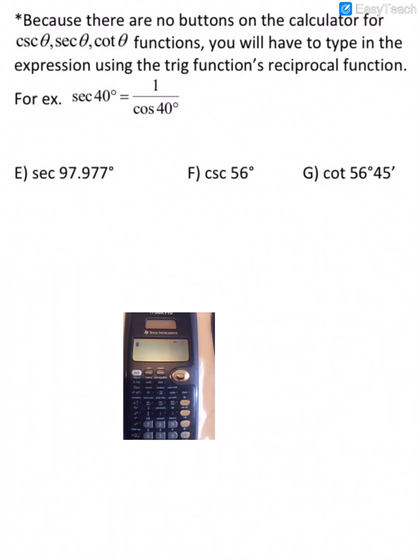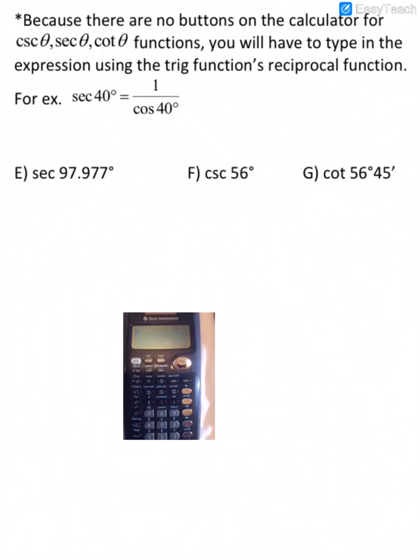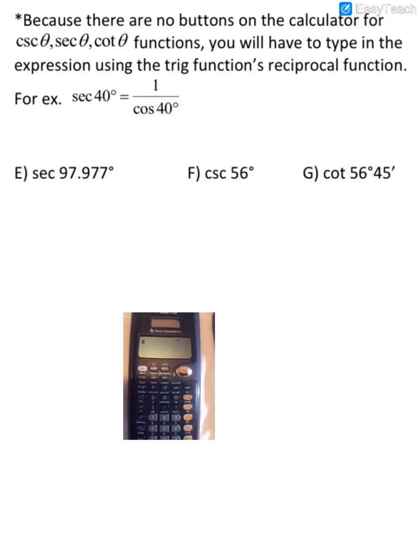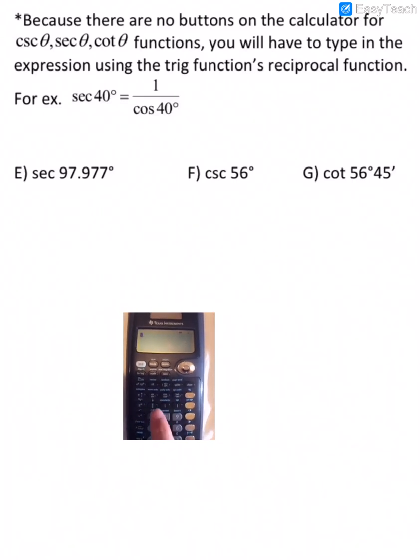So for E, we have the secant of 97.977 degrees, so I need to put it in as 1 over the cosine of that angle. Alright, so right here, there's a little fraction button, so if I press that button, that creates my fraction.